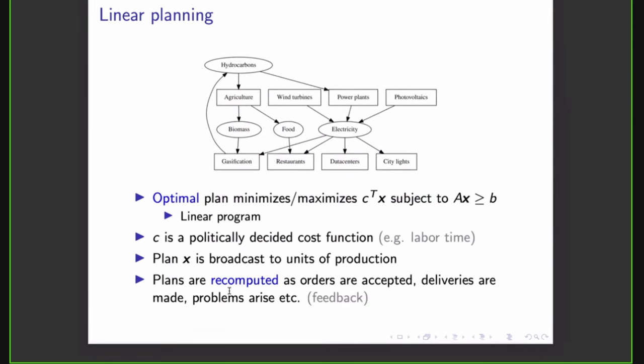So an optimal plan, then, is a plan that minimizes or maximizes a linear function C on X subject to these constraints. And this forms what's known as a linear program. And this C is politically decided unavoidably. And we could choose to minimize, for example, labor time. Once we've computed this plan, we broadcast it to all units of production. And as the system evolves, the plan is recomputed. So as orders are accepted, as deliveries are made, as problems arrive, and so on. And this forms the feedback in the system.